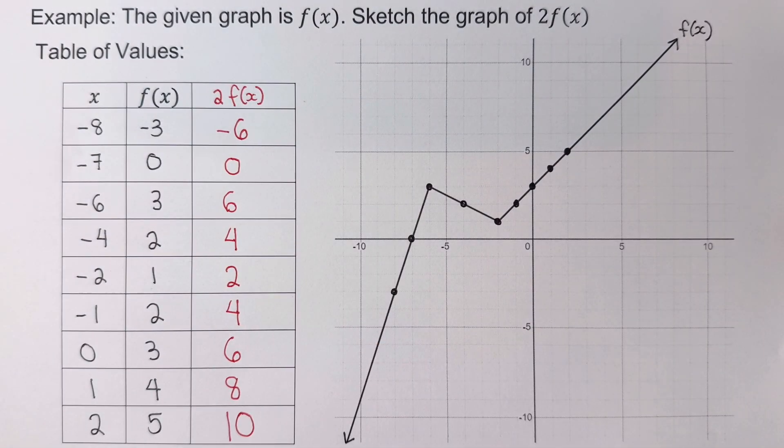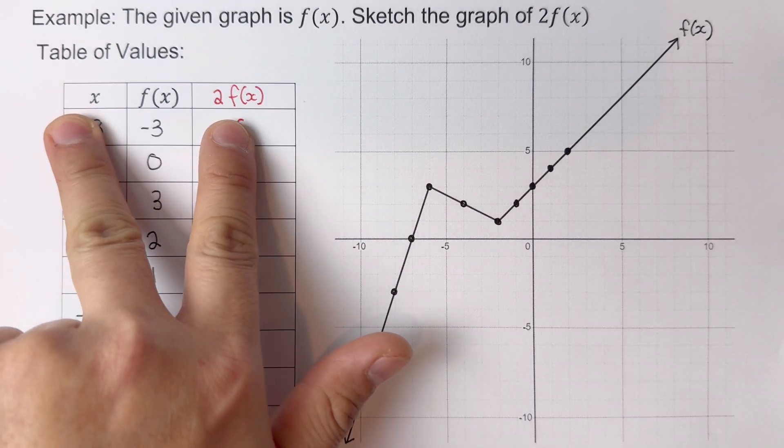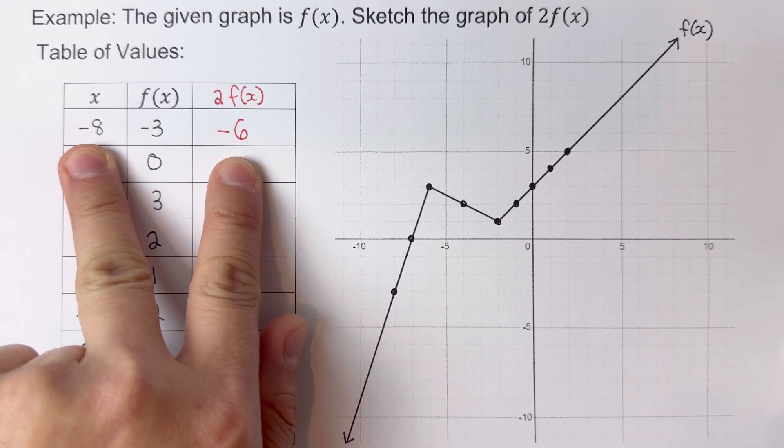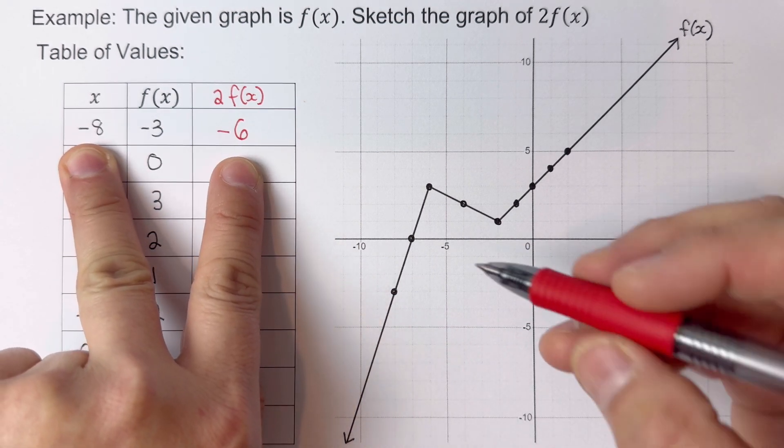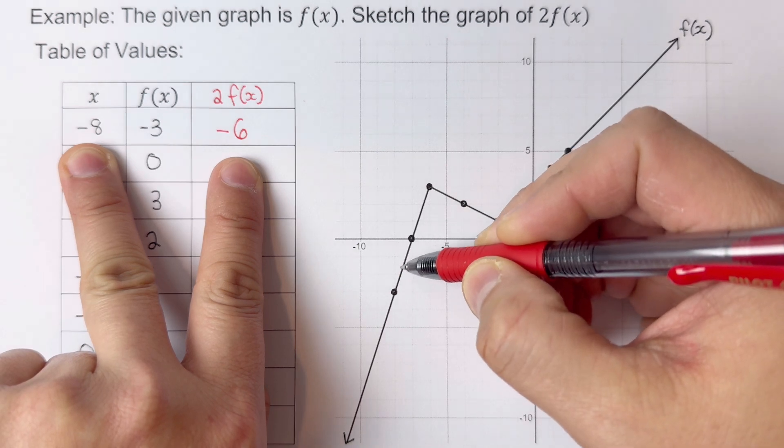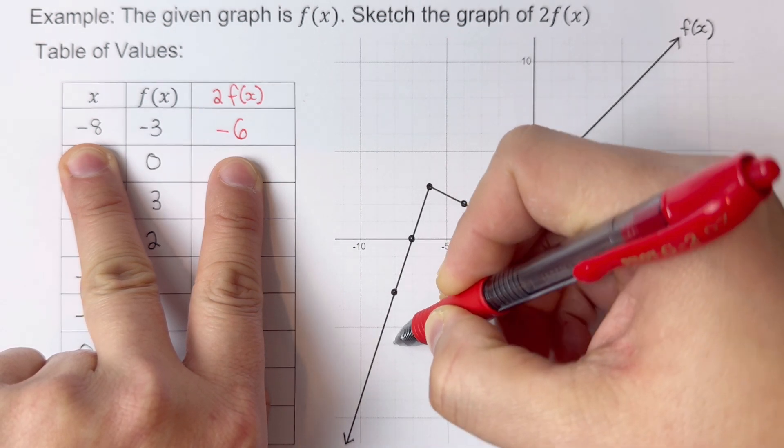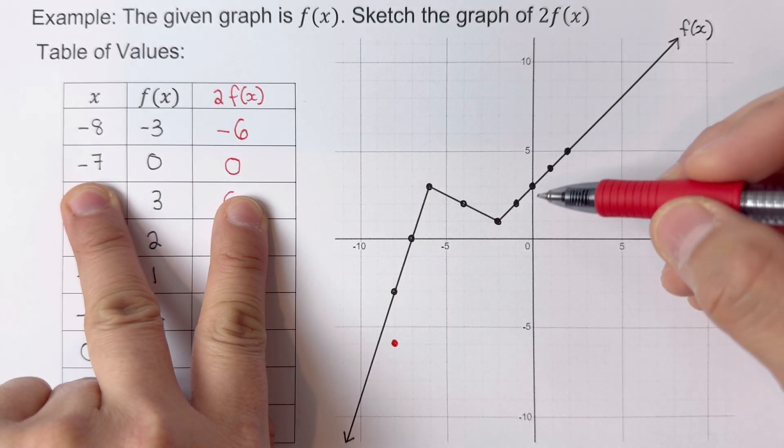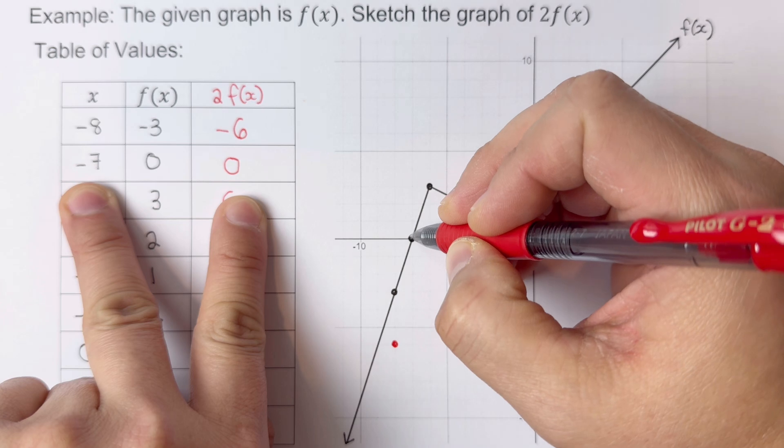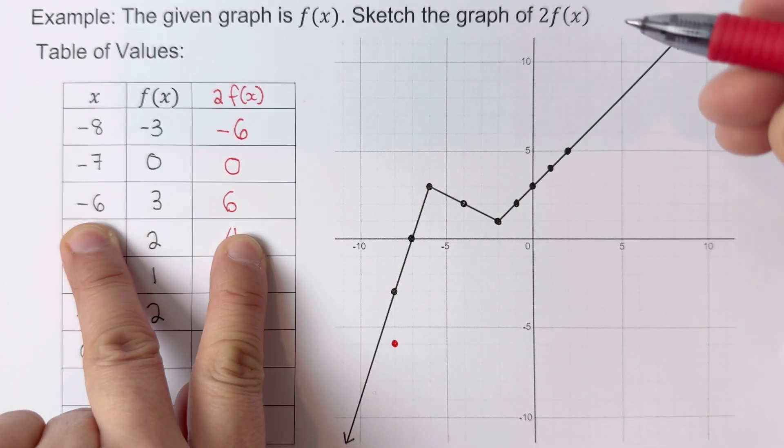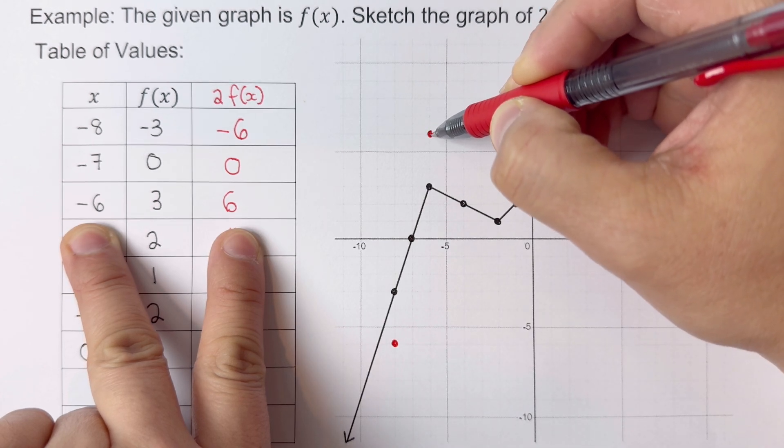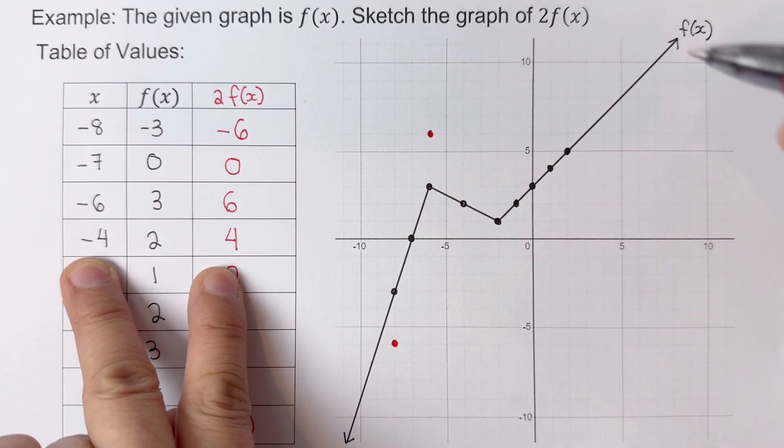The next task is to sketch the graph using x and 2f(x). I'm going to plot negative 8, negative 6; then negative 7, 0; then negative 6, positive 6; then negative 4, 4; then negative 2, 2.